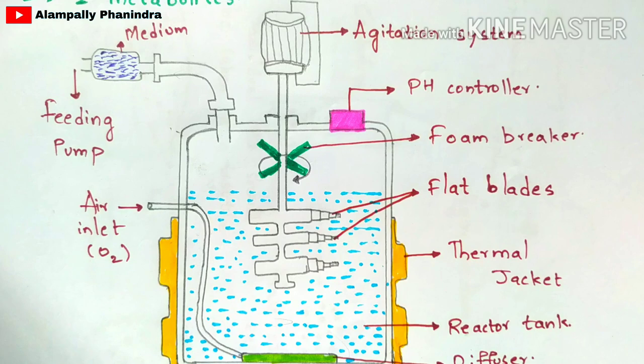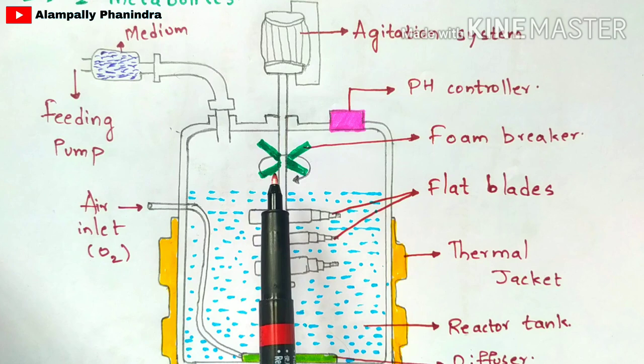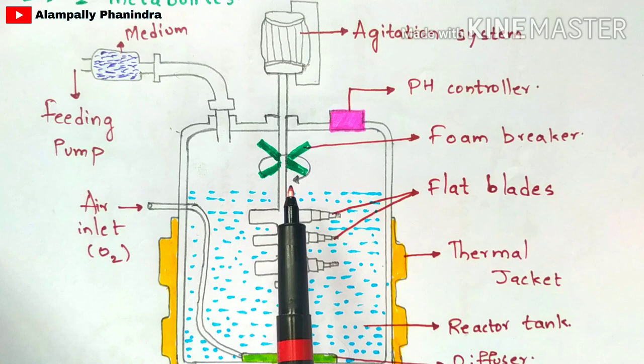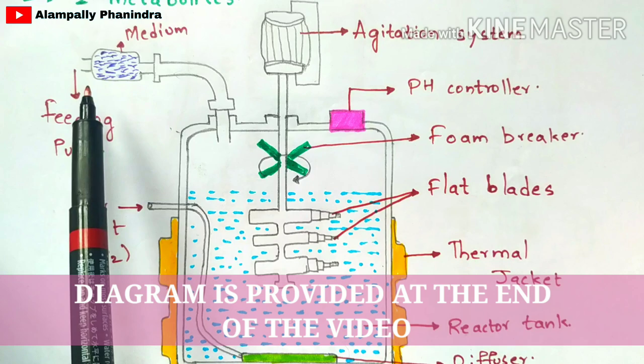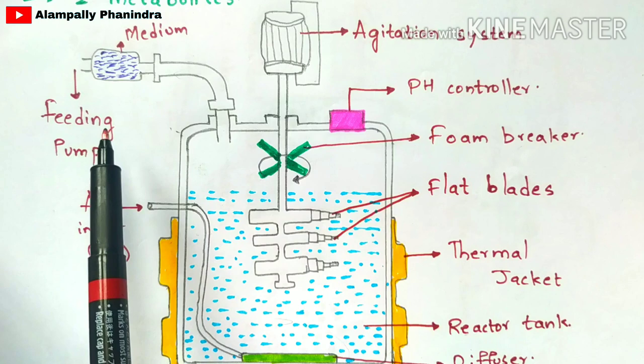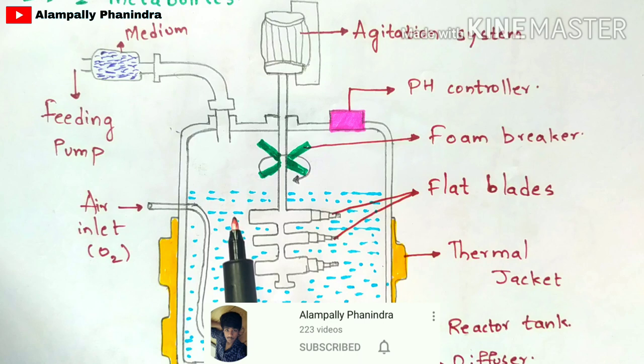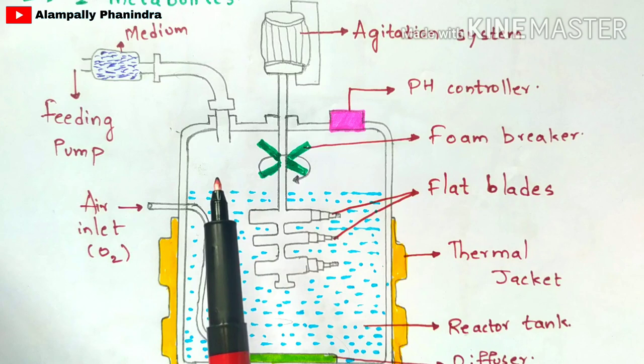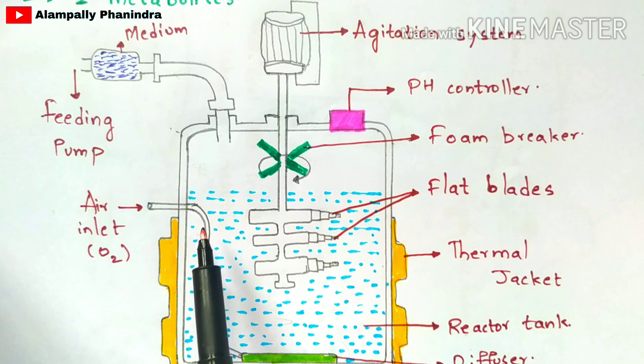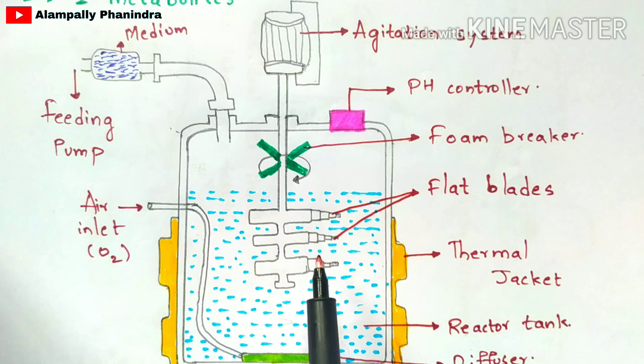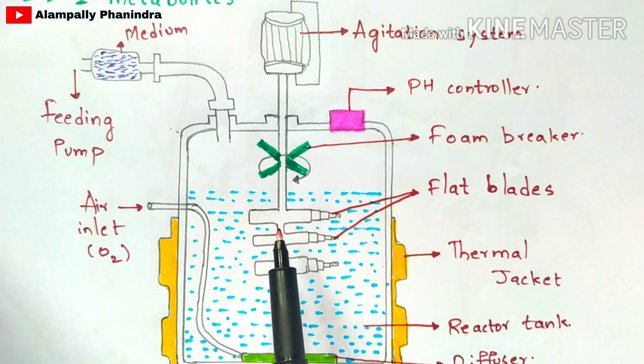The diagram shows a bioreactor or fermentation tank. It includes an agitation system consisting of a motor and blades inside, which play a major role in converting primary metabolites into secondary metabolites. Primary metabolites are inserted through a pipe called the feeding pump. A medium box is also present, and the nutrient medium is slowly introduced into the fermentation tank along with the primary metabolites.